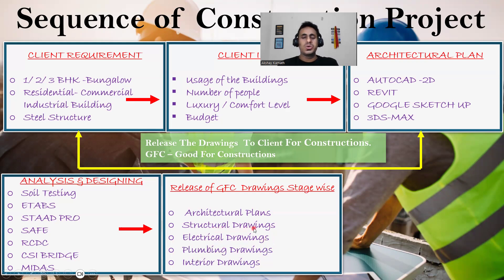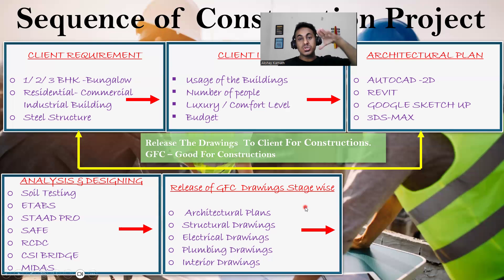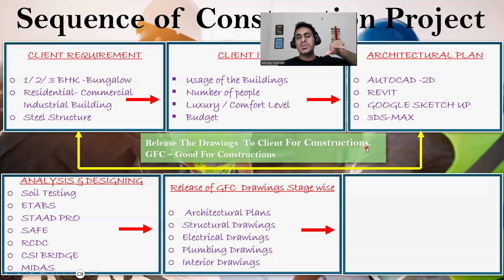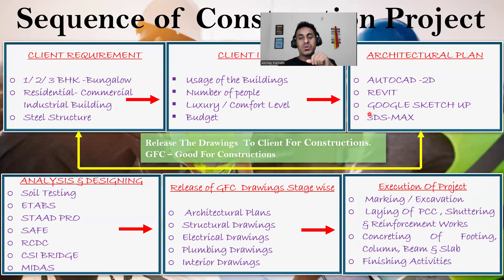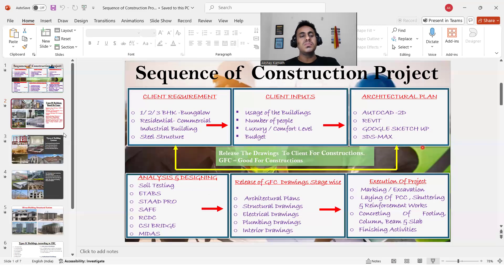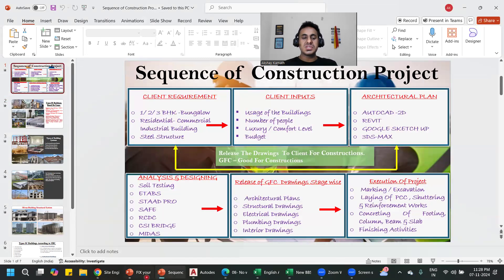If you're starting your own consultancy for a normal house, a civil or structural engineer usually prepares electrical, plumbing, and structural drawings all together. In a big firm there are separate engineers. Once all drawings are ready — everything is on paper — the client gives the execution to a contractor. The contractor starts with marking, then excavation, PCC, footing, column, beam, slab, staircase, brickwork, plastering, painting, and finally hands over the building to the client.